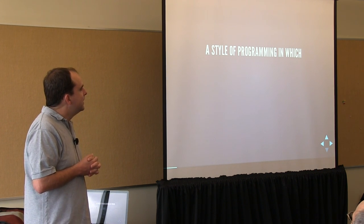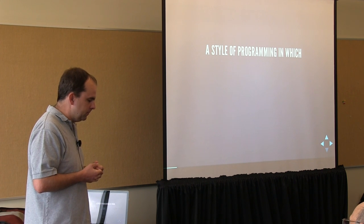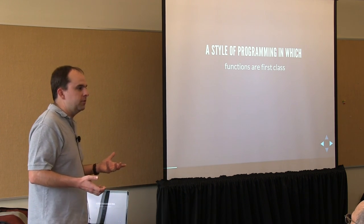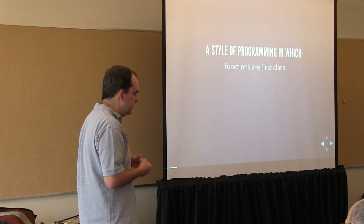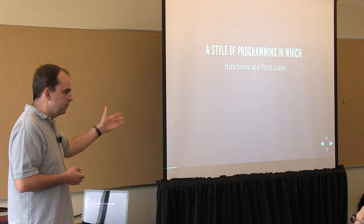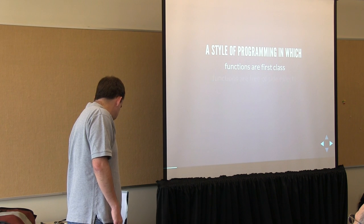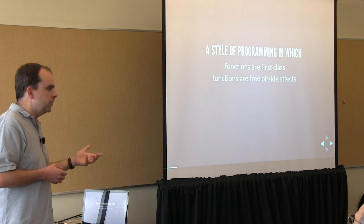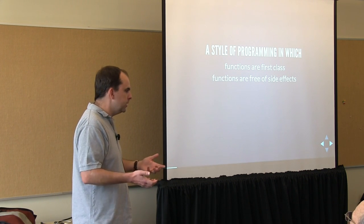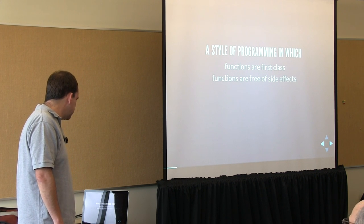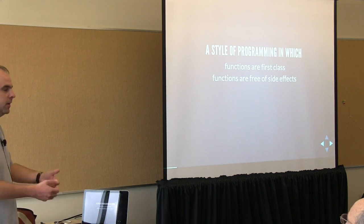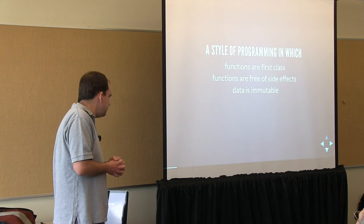There are several aspects of functional programming, and there are a few that I'm going to concentrate on — this is not an exhaustive list. One of the main things is that functions are first class in a functional language. Like in object-oriented languages where we can pass around objects, in a functional language we can pass functions around. Functions in a functional programming style are generally free of side effects — they don't change unexpected things, they don't perform I/O in general.